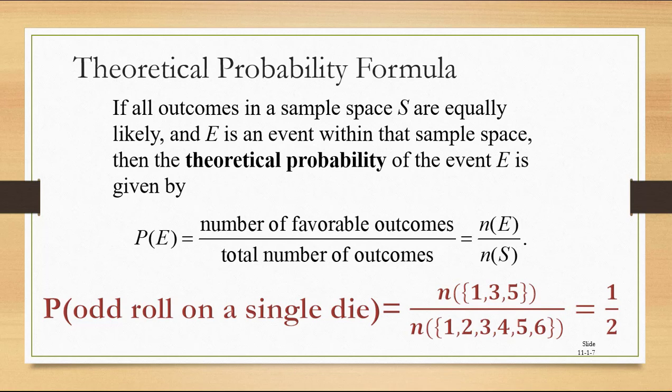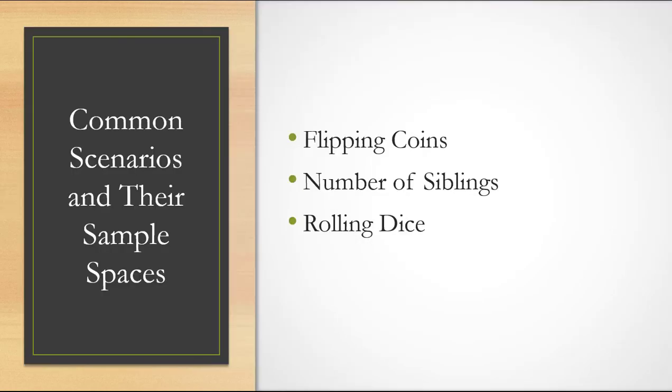You can see how important the sample space is when we're calculating the probability. So we're going to look at some common scenarios and the sample spaces that we need to calculate their probabilities: flipping coins, possible genders of siblings, and rolling dice.